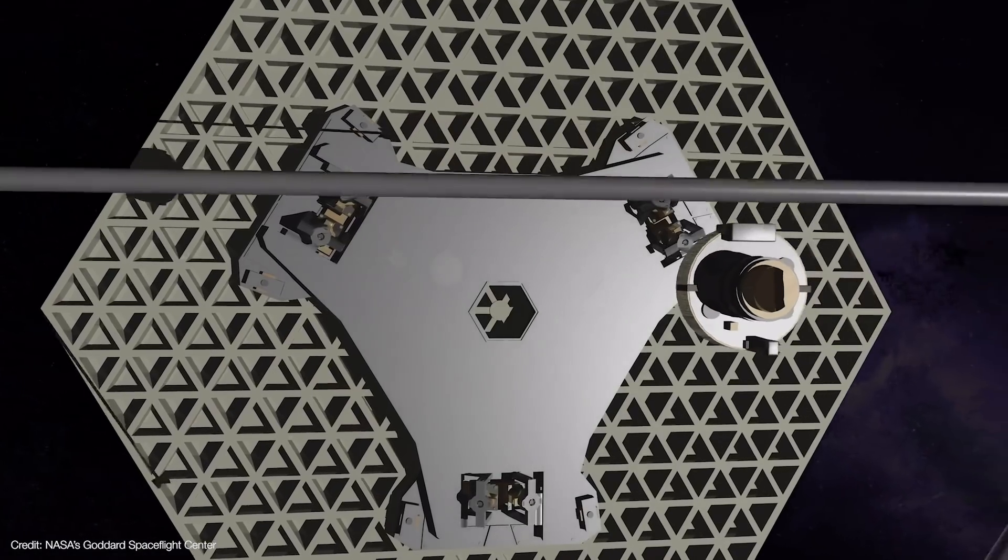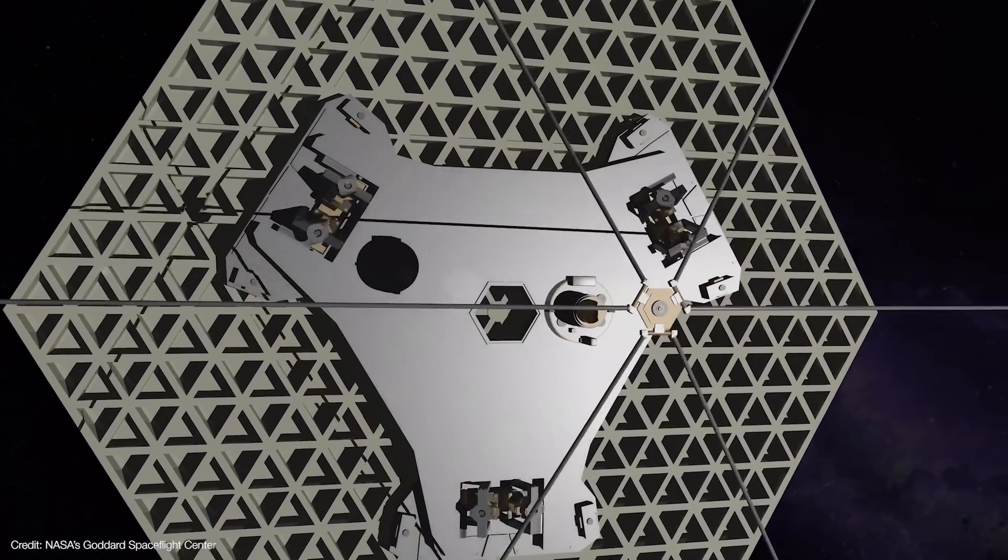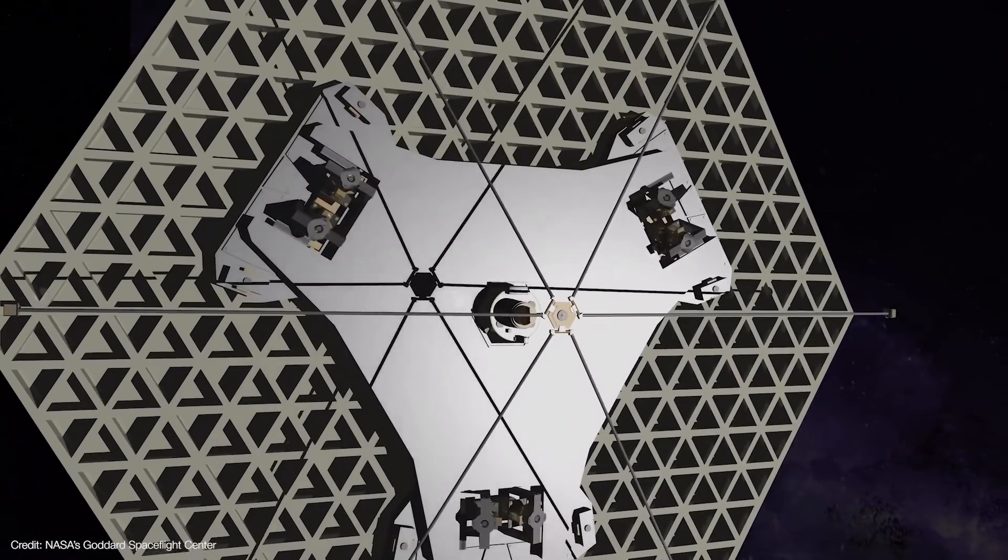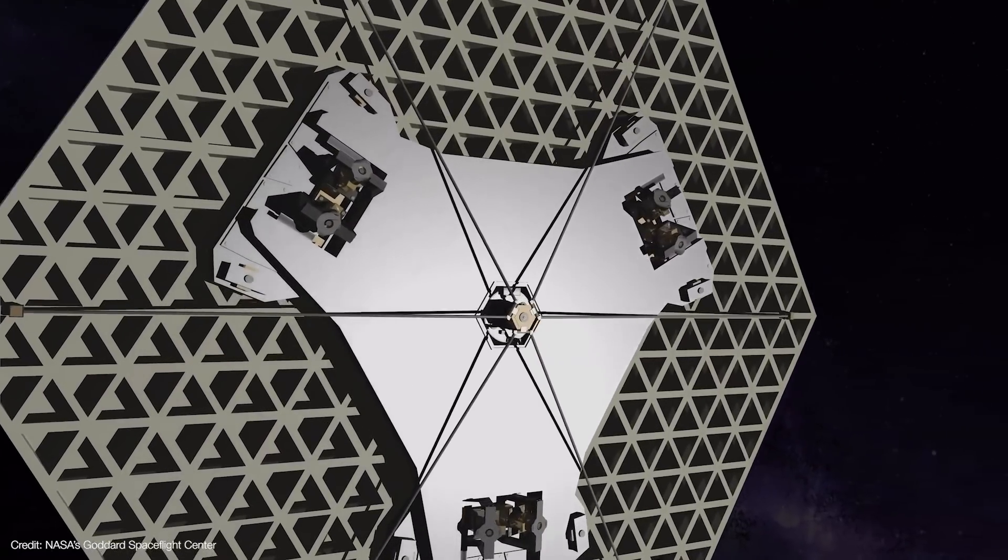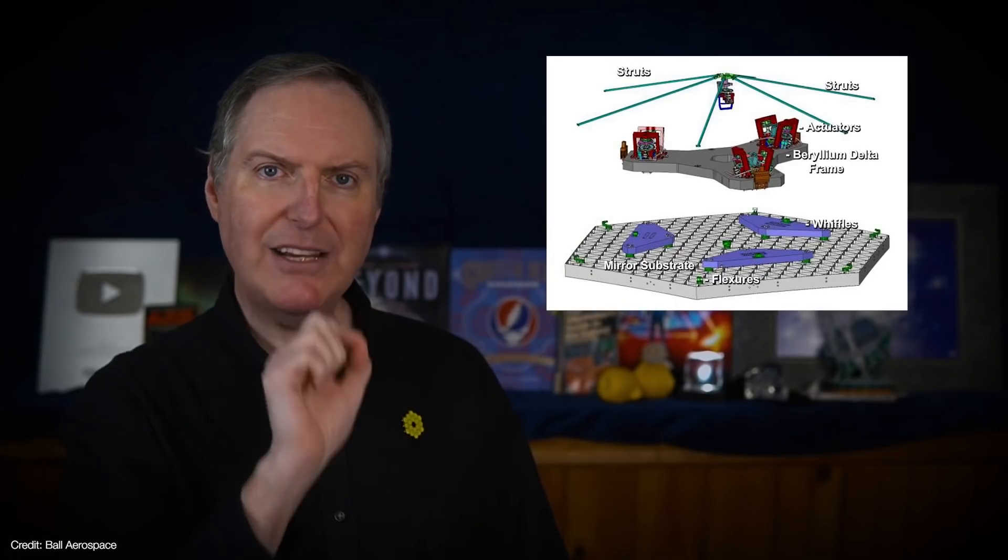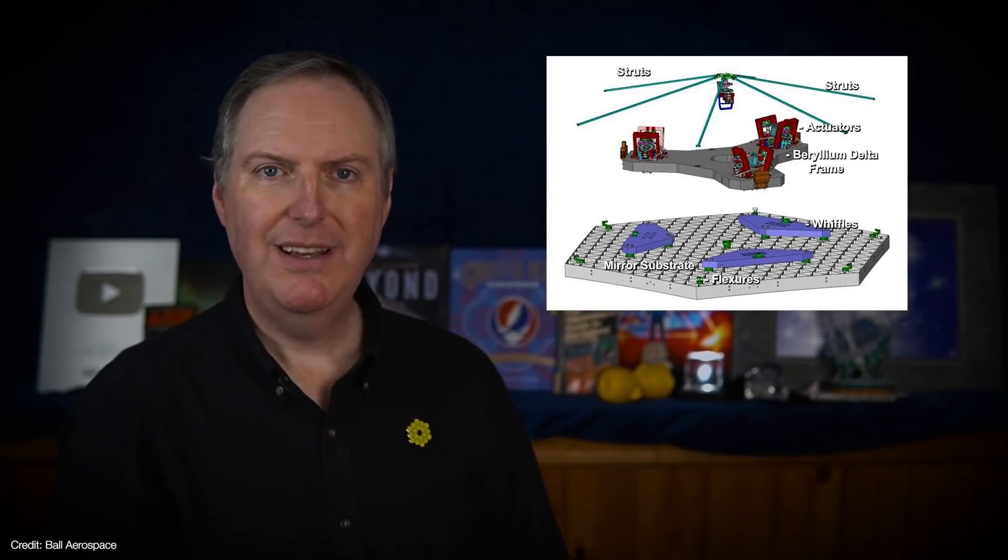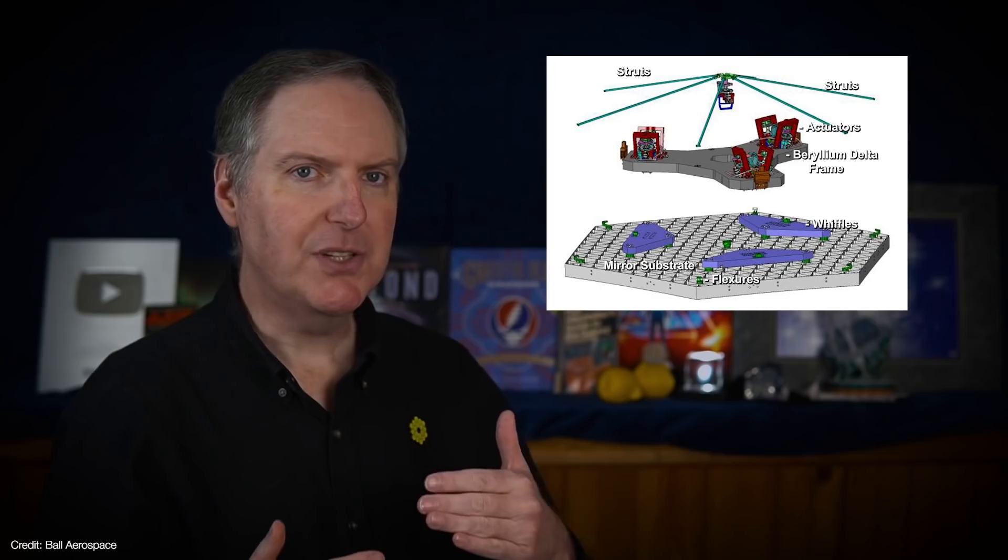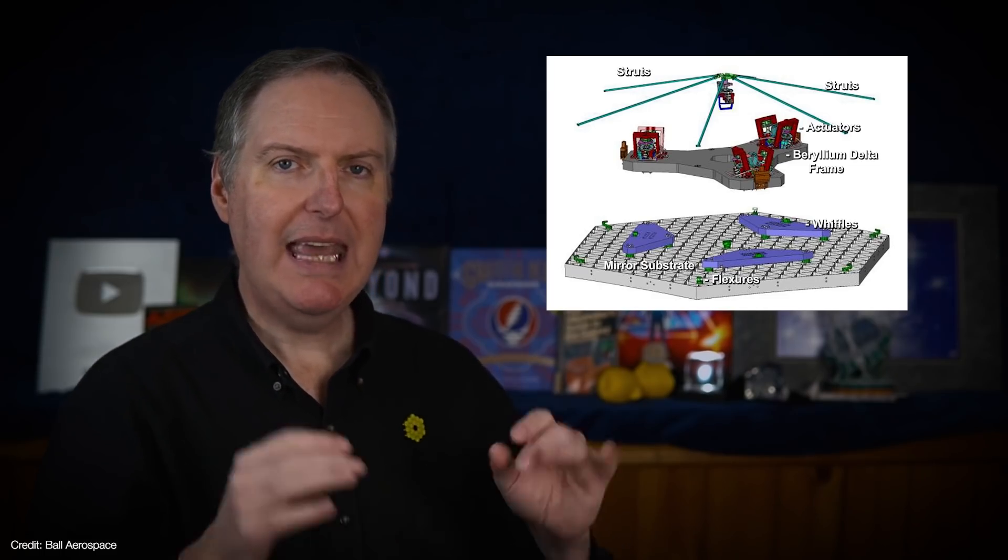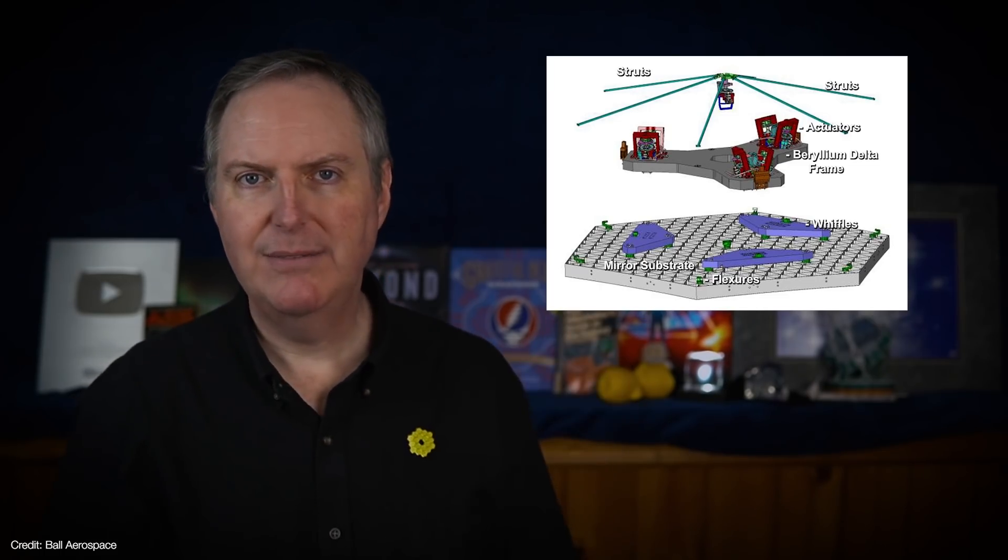An additional actuator in the center of each segment is connected to six legs that attach at the hexagon corners. The push-pull action is then able to adjust the segment's radius of curvature, and that means any imperfections in the mirror segments can be individually corrected. Likewise, the secondary mirror can be adjusted in a similar manner, although it doesn't use a central actuator.